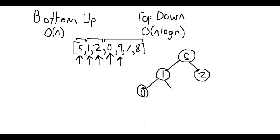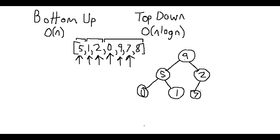We insert 9. We ask: is 1 less than 9? No, so our 9 and our 1 need to swap. Then we ask again: is 9 less than 5? No, it is not, so 9 and 5 need to swap. We're back in heap order. We continue and insert 7. Is 7 less than 2? No, so 7 needs to swap with 2.